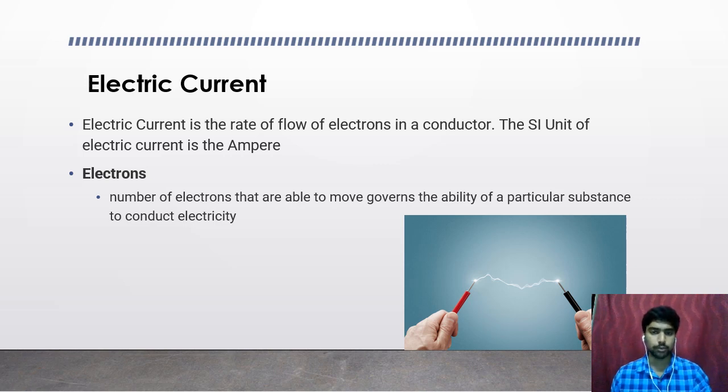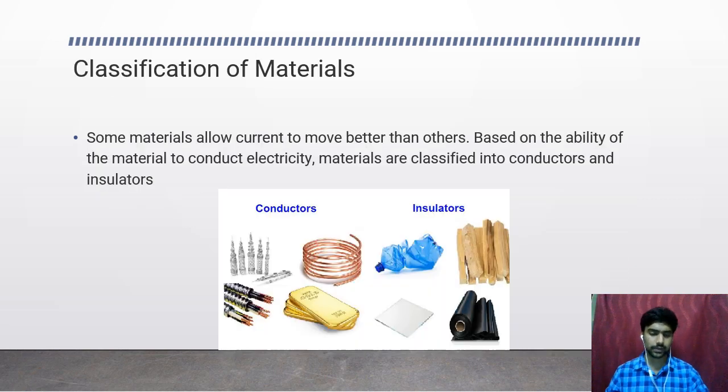The movement of the charged particles is called electric current. Based on the ability of a substance to make the electrons flow through it determines the type of substance it is. We classify the materials into two different categories: conductors and insulators.